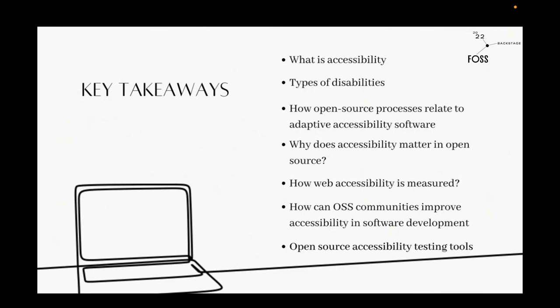During this session, we're going to look at what exactly accessibility is all about, the types of disabilities that exist, how open source processes relate to adaptive accessibility software, why accessibility matters in open source, how web accessibility can be measured, how open source communities can improve accessibility for their software, and the different open source accessibility tools that exist.